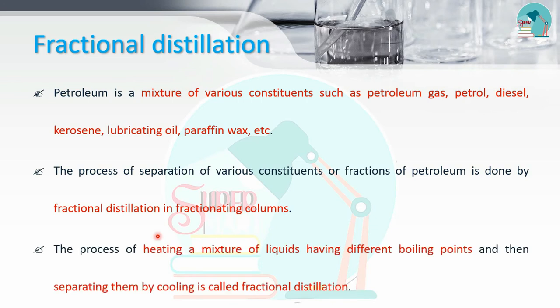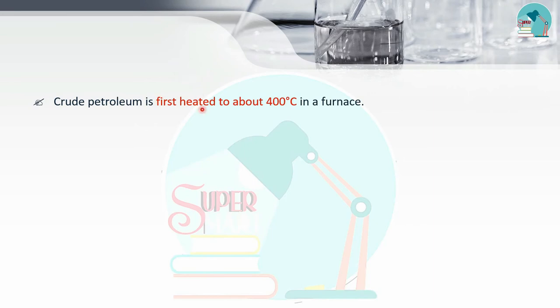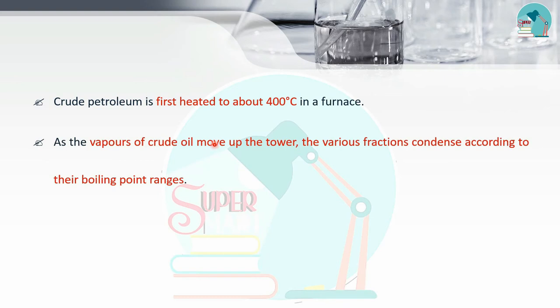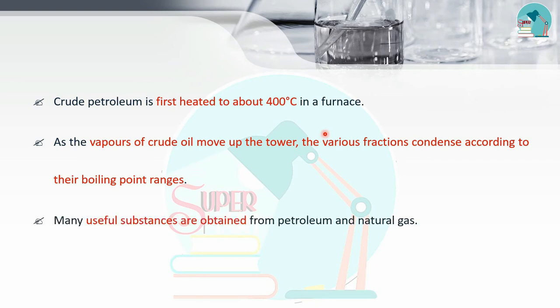The mixture has different boiling points, so each component is separated and cooled individually. This process is called fractional distillation. Crude petroleum is heated to around 400 degrees Celsius. The vapors rise in the tower and are separated at different boiling points, then condensed into useful substances called petrochemicals.